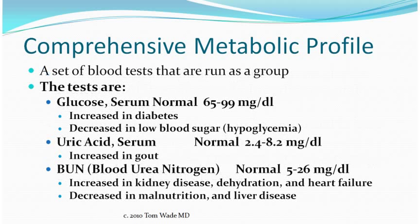Now let's go over the tests in somewhat more detail. The serum glucose is how we diagnose diabetes. If the glucose is 126 on a fasting blood draw — meaning the blood was drawn first thing in the morning, after an overnight fast, before you ate any breakfast — then you have diabetes. That's assuming that when we repeat the test we get the same results; it needs to be abnormal more than once.